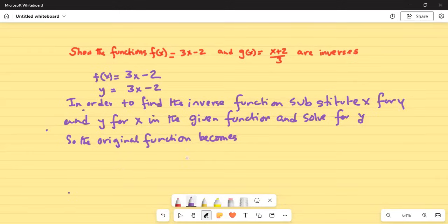So the original function becomes I'm going to substitute for y, x, and for x, y. Then I have to solve for y. In order to do that I will add 2 on both sides because I will separate 3y from the constant term minus 2.